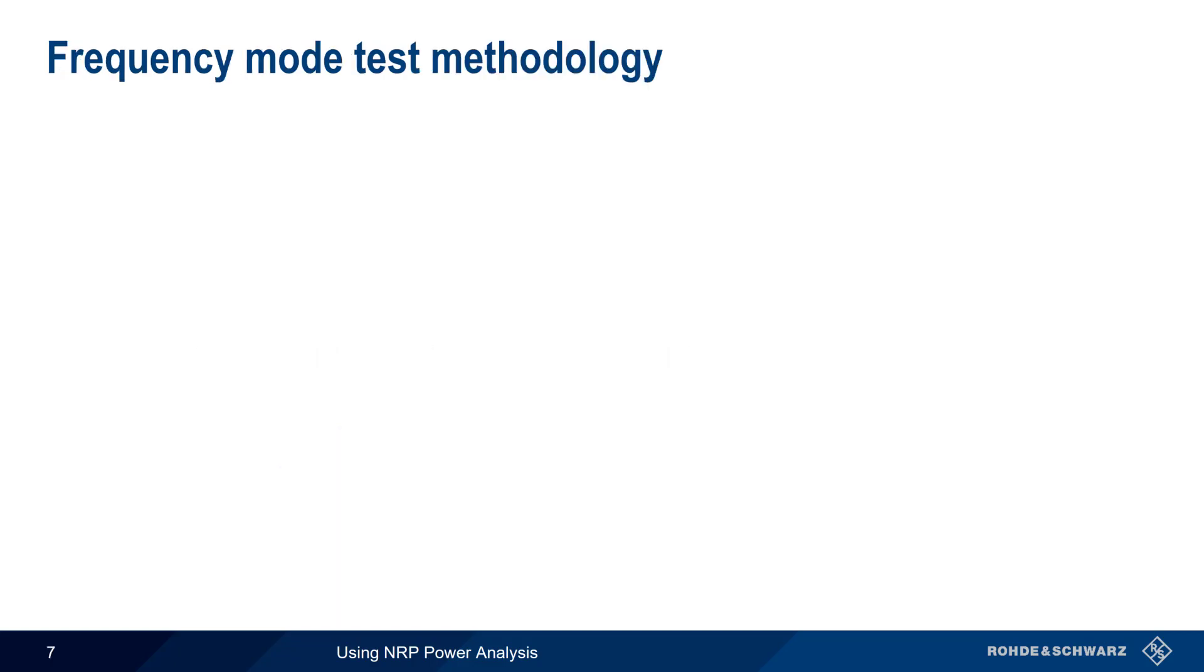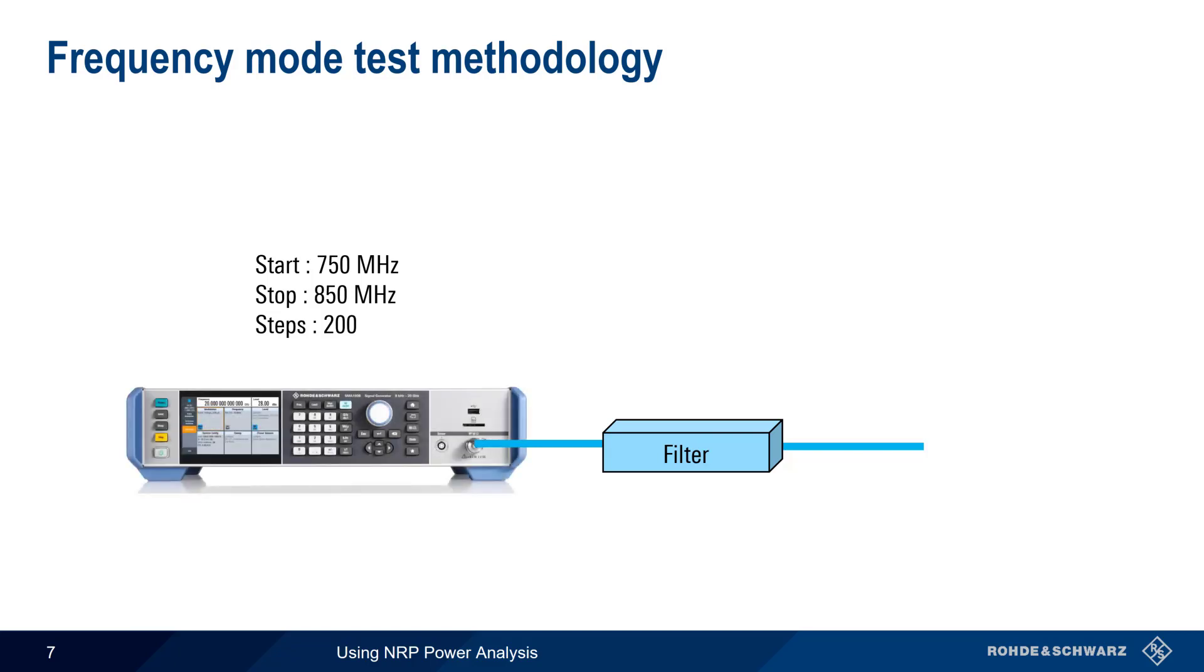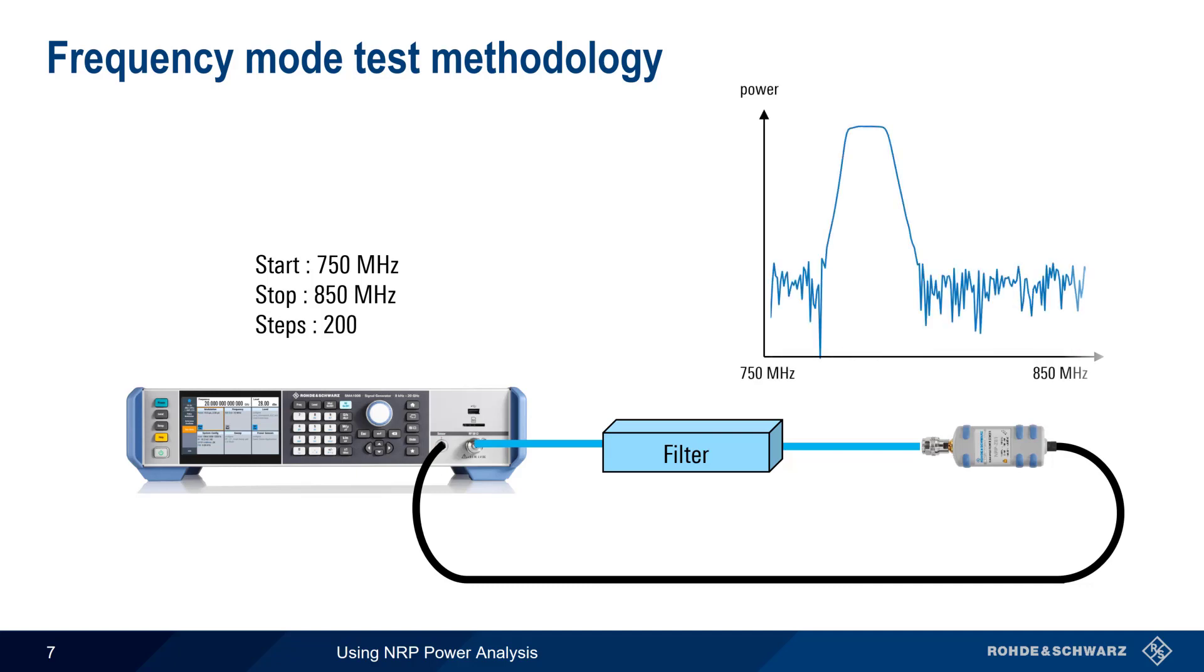For our frequency mode example, let's determine the passband of a simple filter. We first specify start and stop frequencies, and then the number of steps. The power analysis option will cause the SMA to transmit a signal at each one of these steps and monitor the received power at the attached NRP sensor. The application will plot the results on a graph, allowing us to view and measure our filter passband parameters.